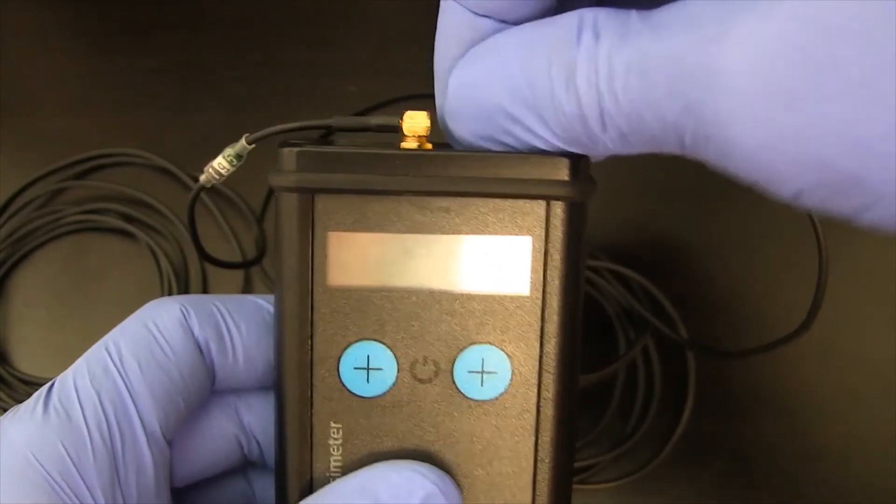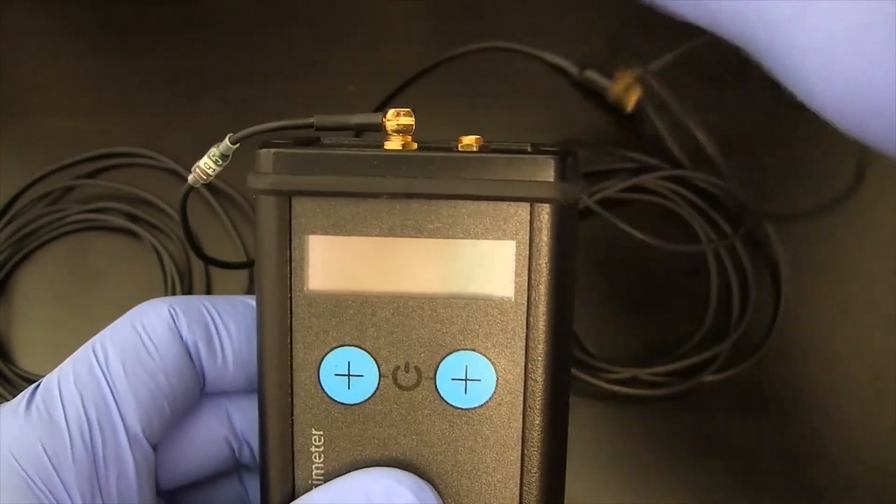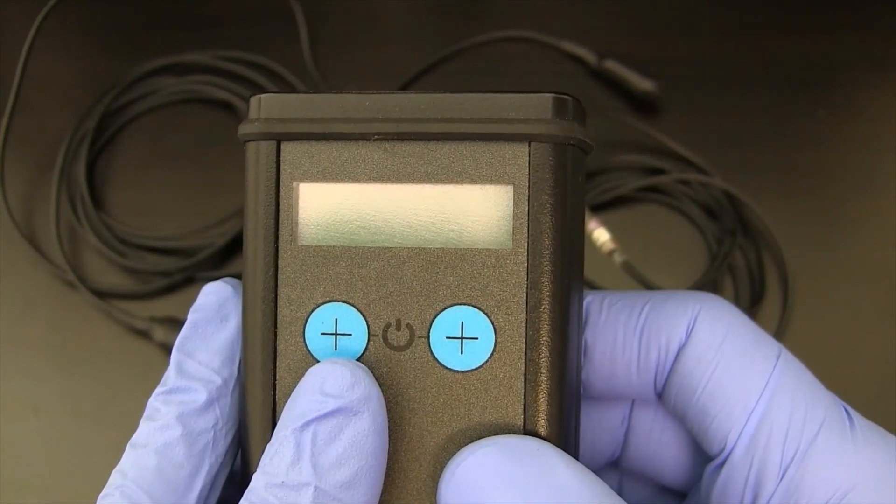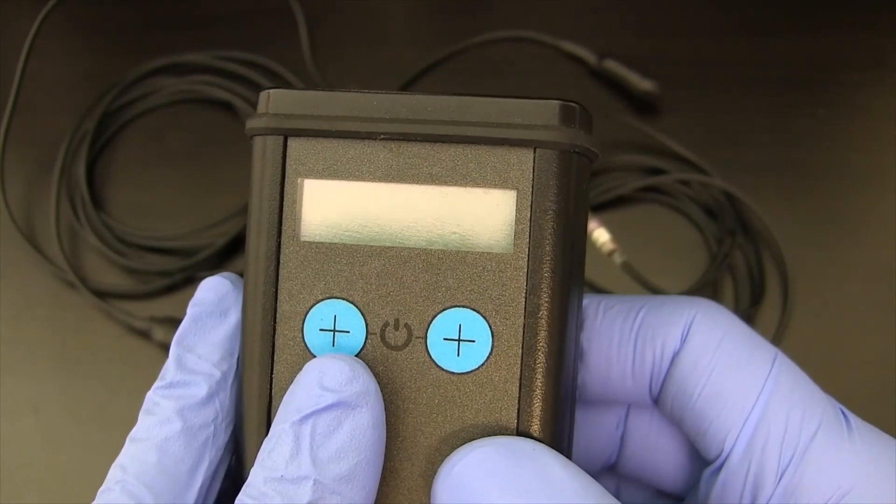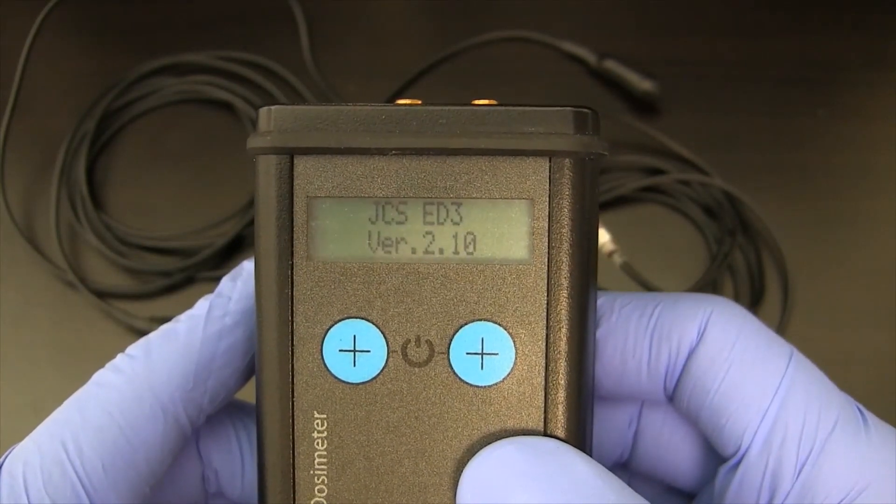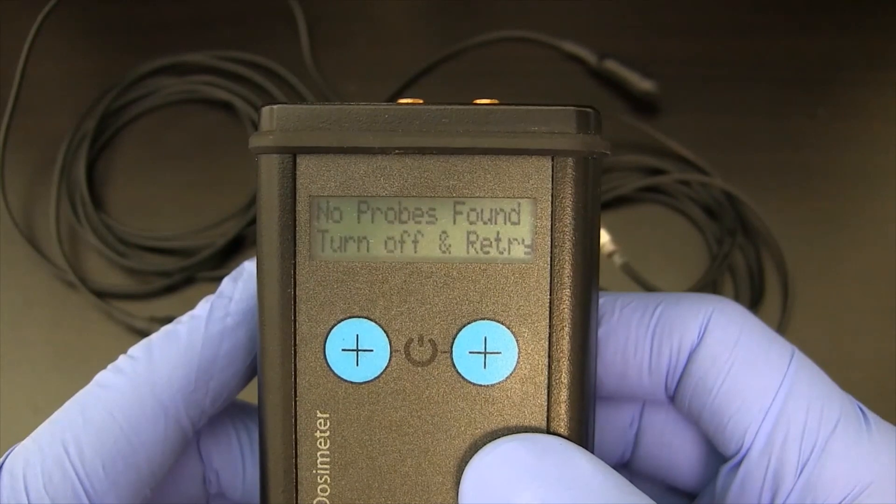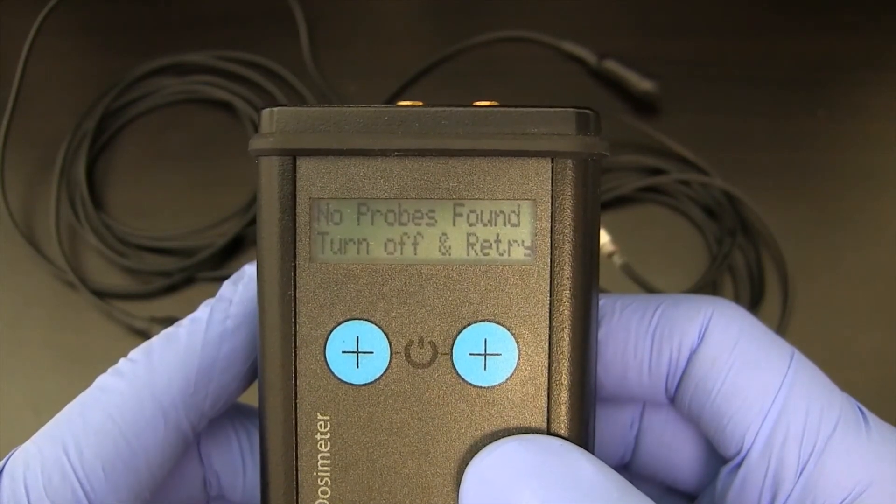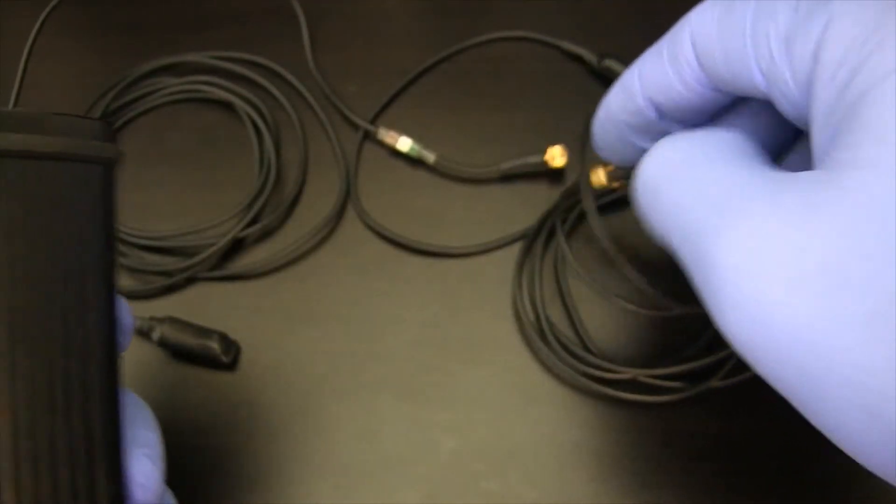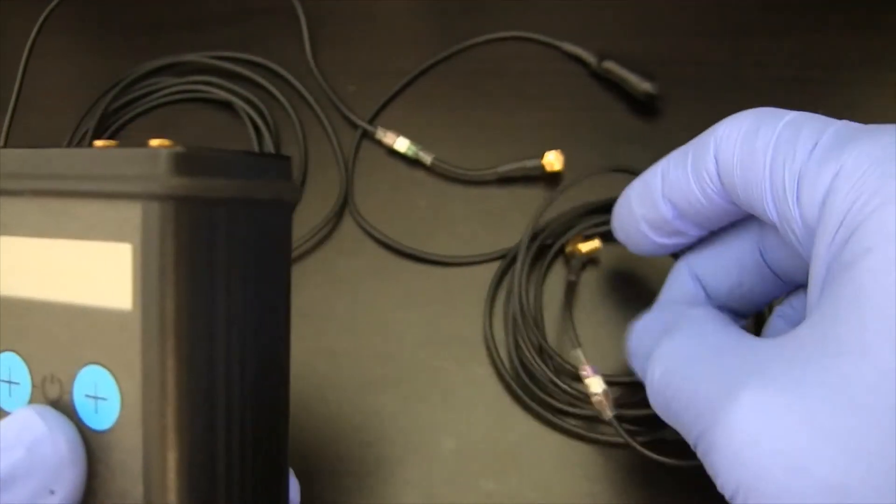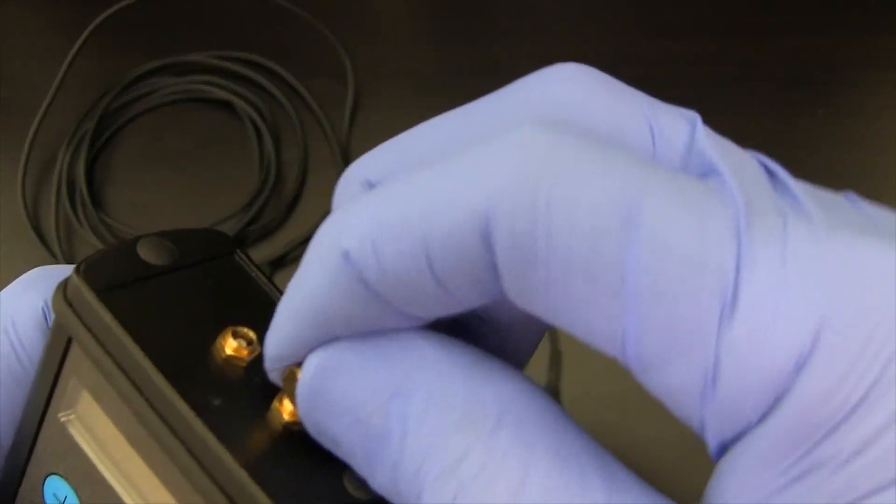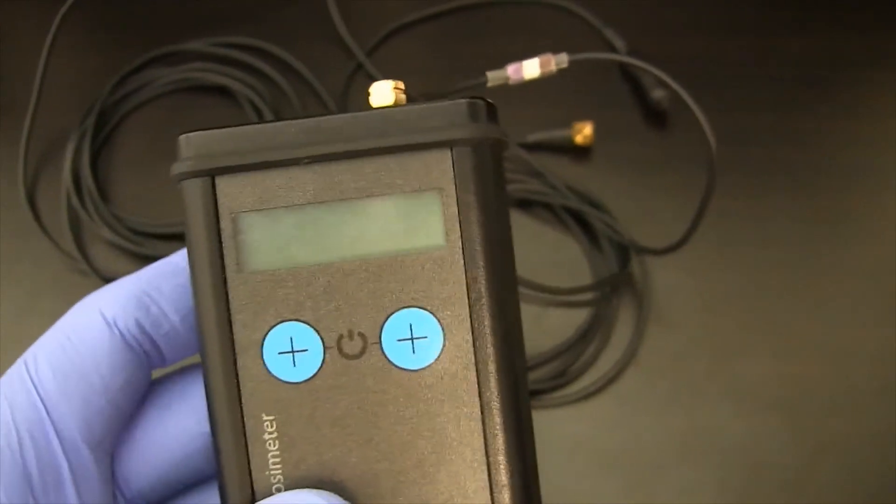But let's do something else. What we're going to do is disconnect both of the detectors and turn the unit on. The unit is smart enough to know if a detector is not connected. And it's telling us no probes are found. Turn it off and retry.